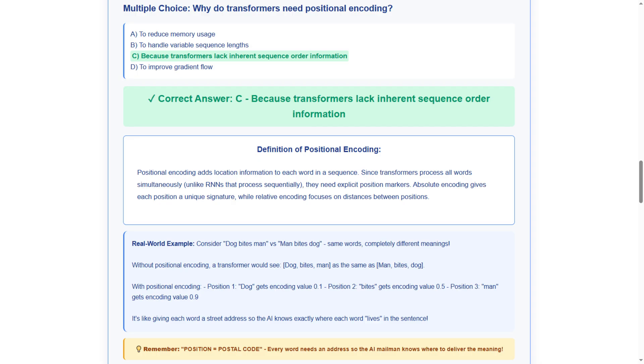Our real-time example shows position encoding values. Position 1 gets 0.1. Position 2 gets 0.5. Position 3 gets 0.9. Like giving each word a street address, so AI knows exactly where each word lives in the sentence. This demonstrates address assignment system. The memory tip teaches us position equals postal code. Every word needs an address, so the AI mailman knows where to deliver the meaning. Remember, postal address system.